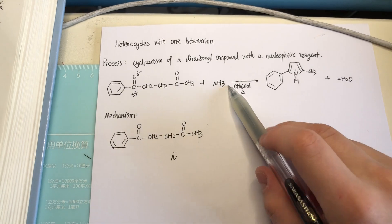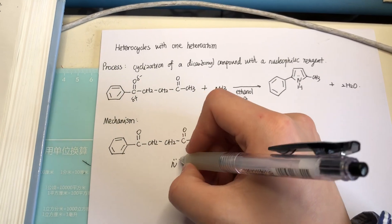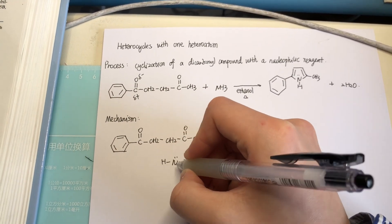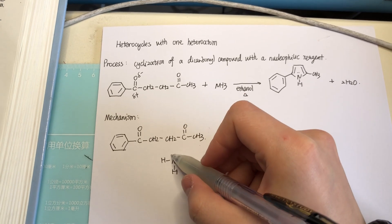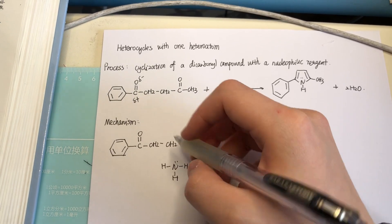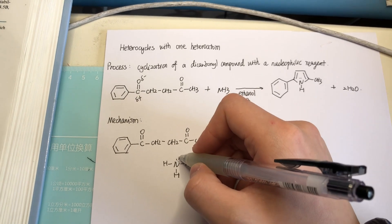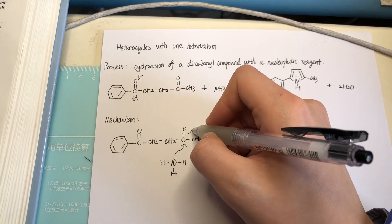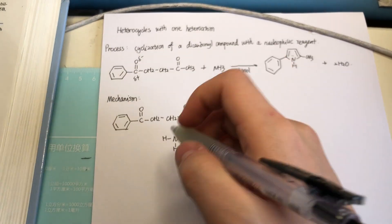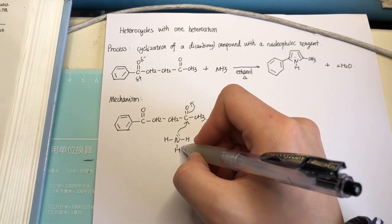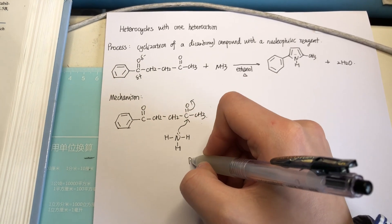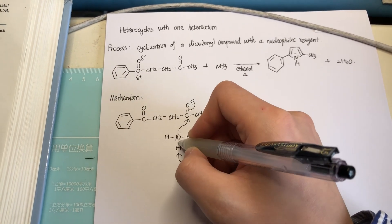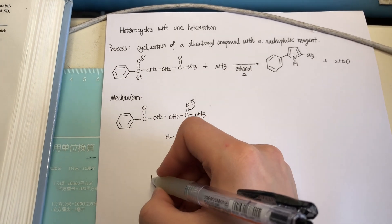Let's look at the reagent here, which is the ammonia. I will draw the structure — there is a lone pair of electrons here, and it's going to attack the carbon here. Then the oxygen takes on negative charge, and a base will take this proton and draw it back.